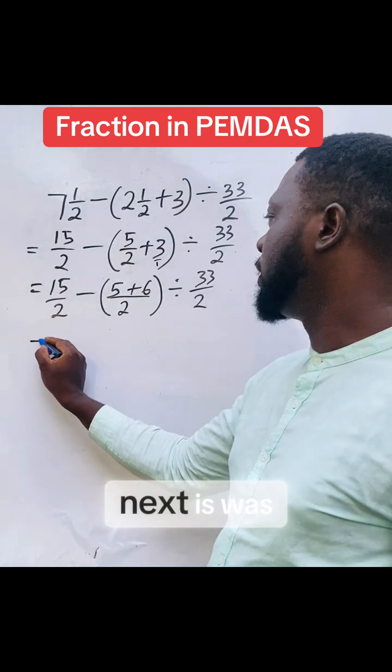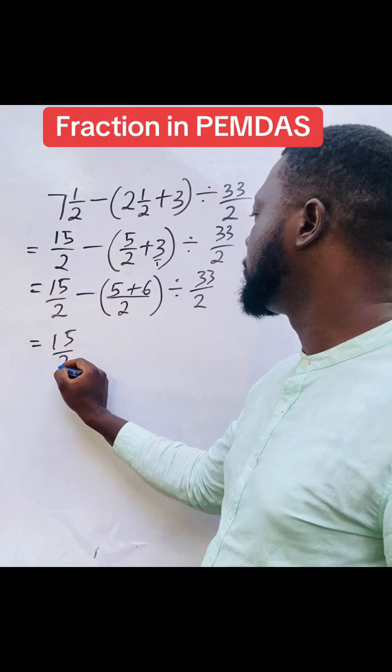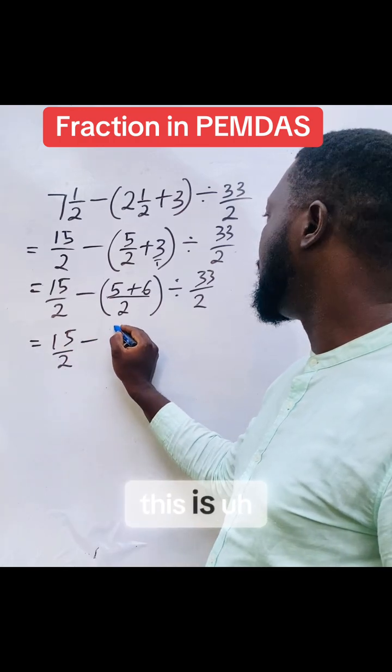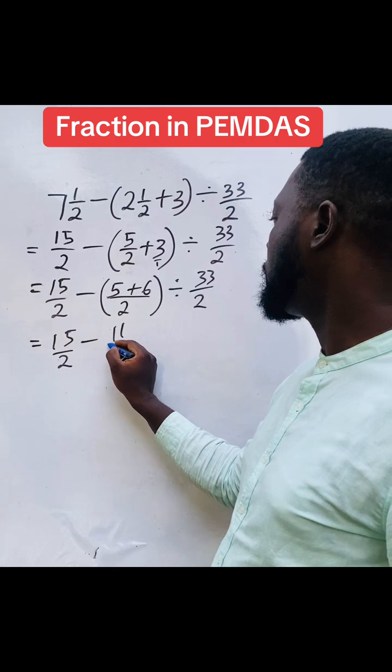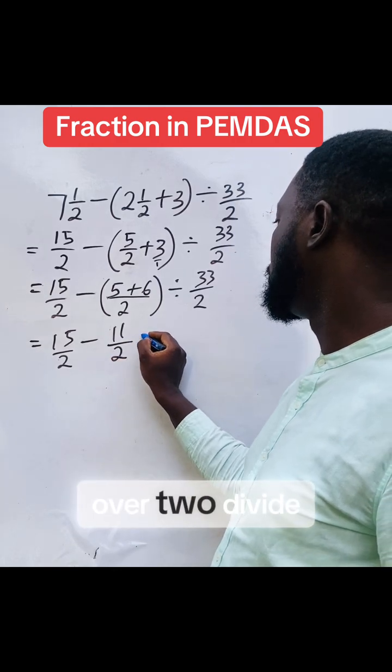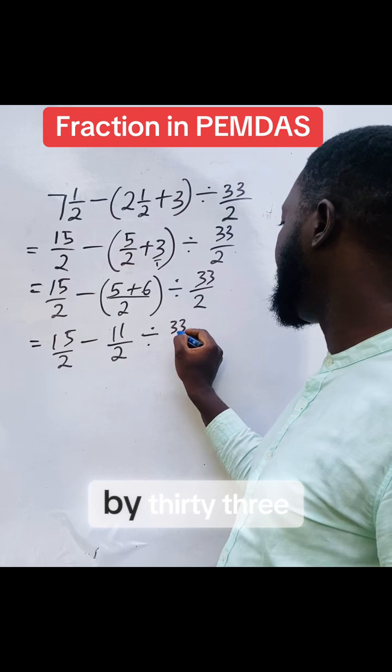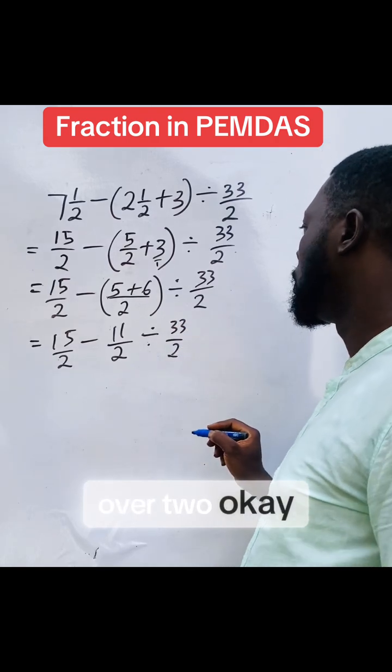So what you do next is we'll simplify further. This is 11 over 2 divided by 33 over 2.